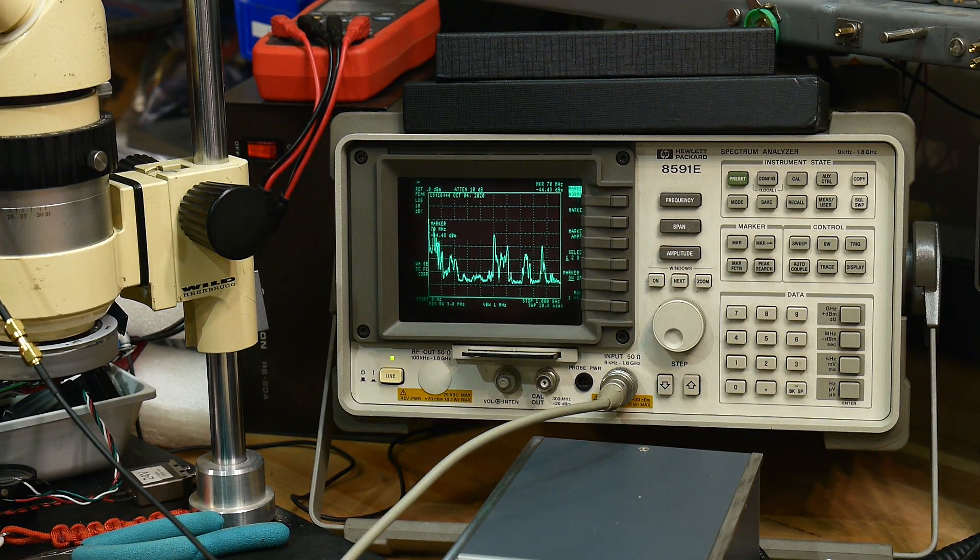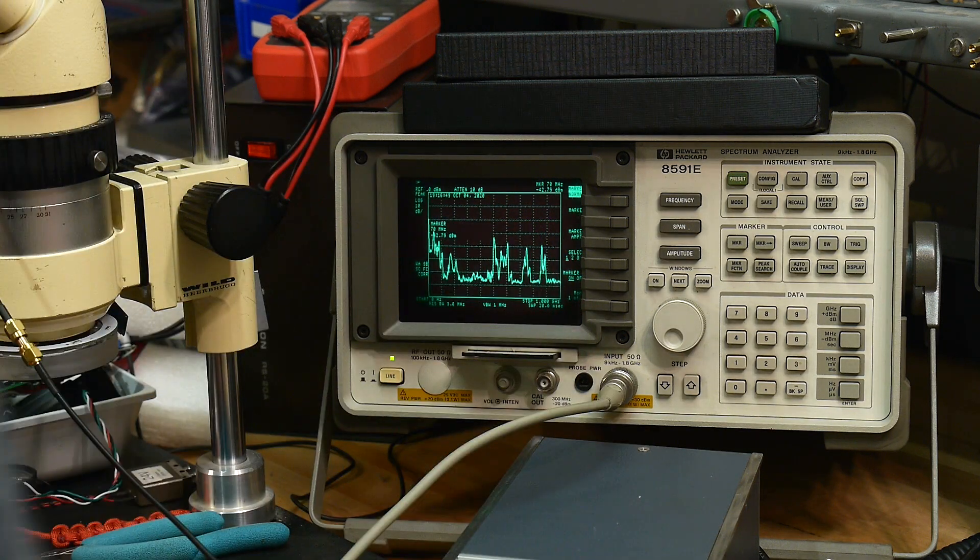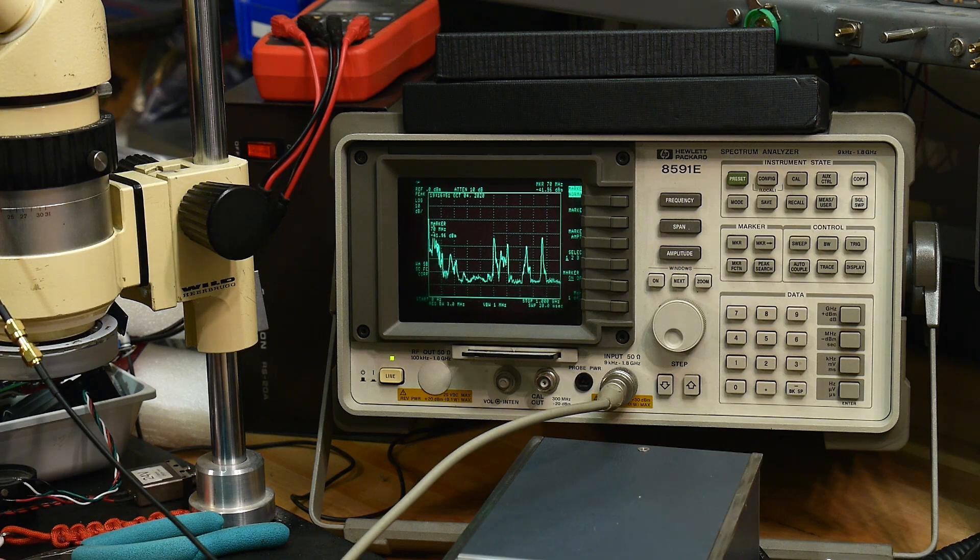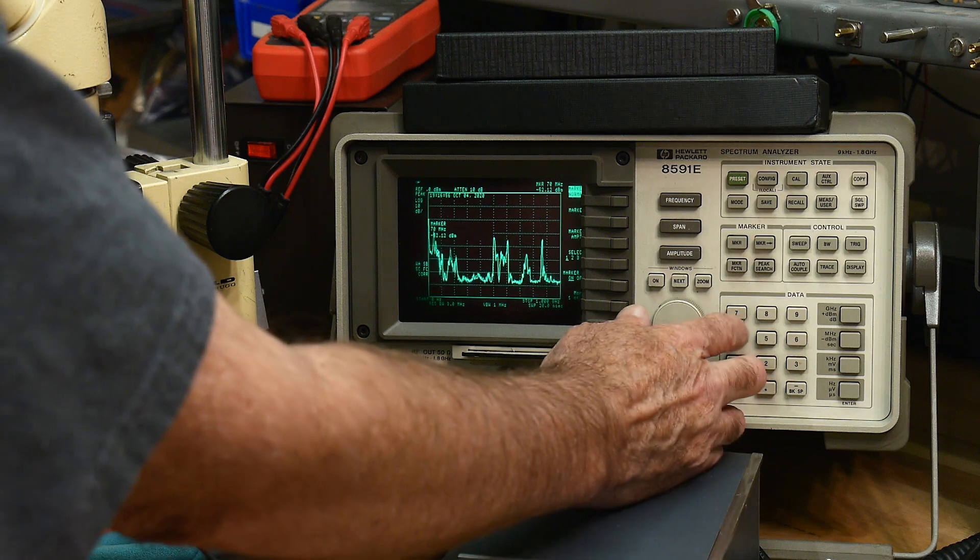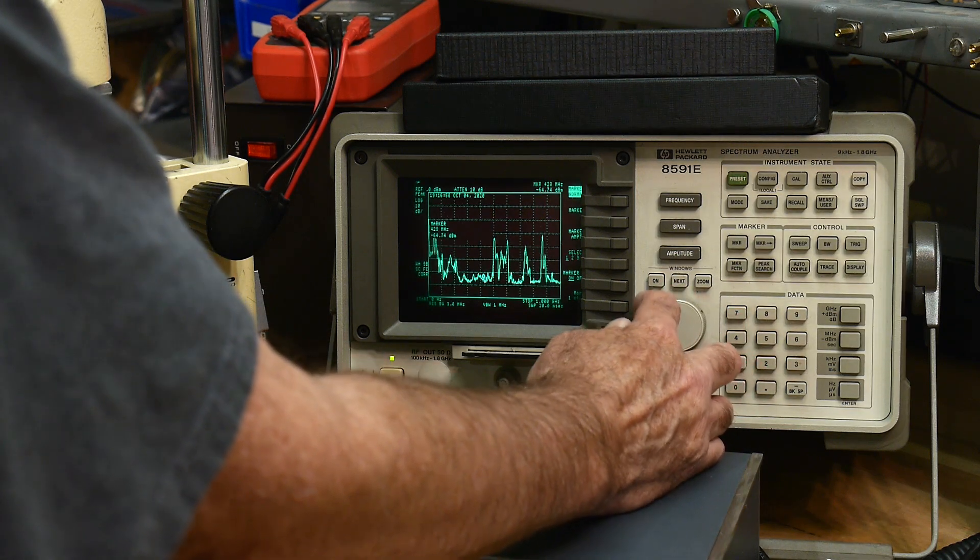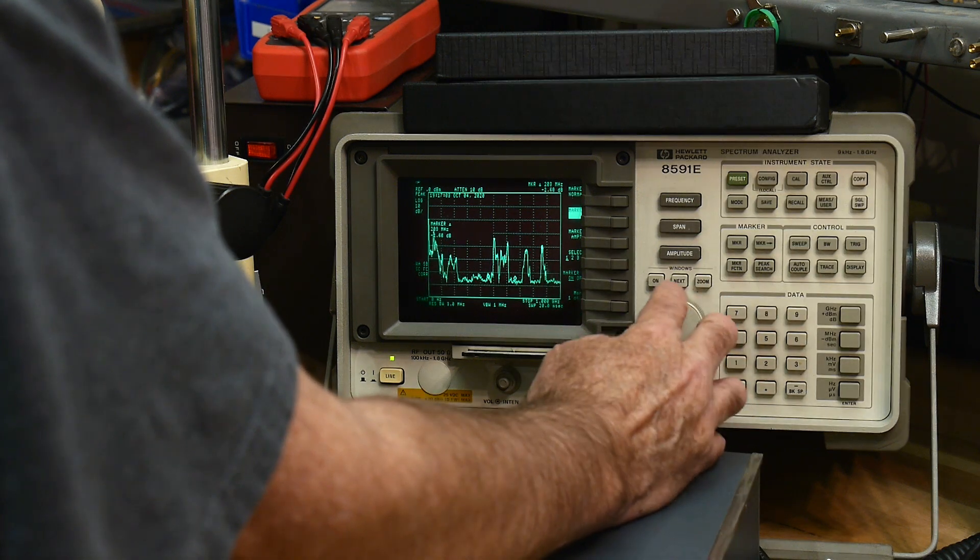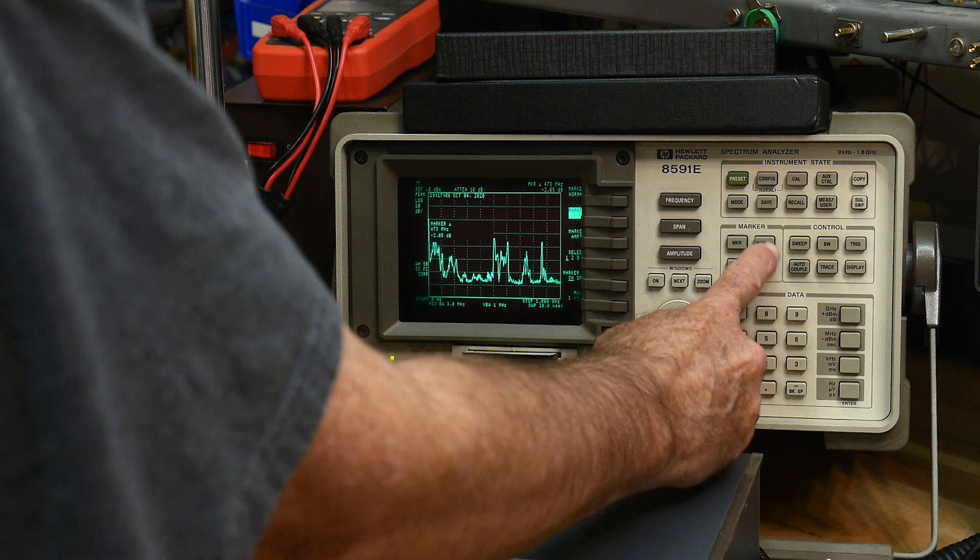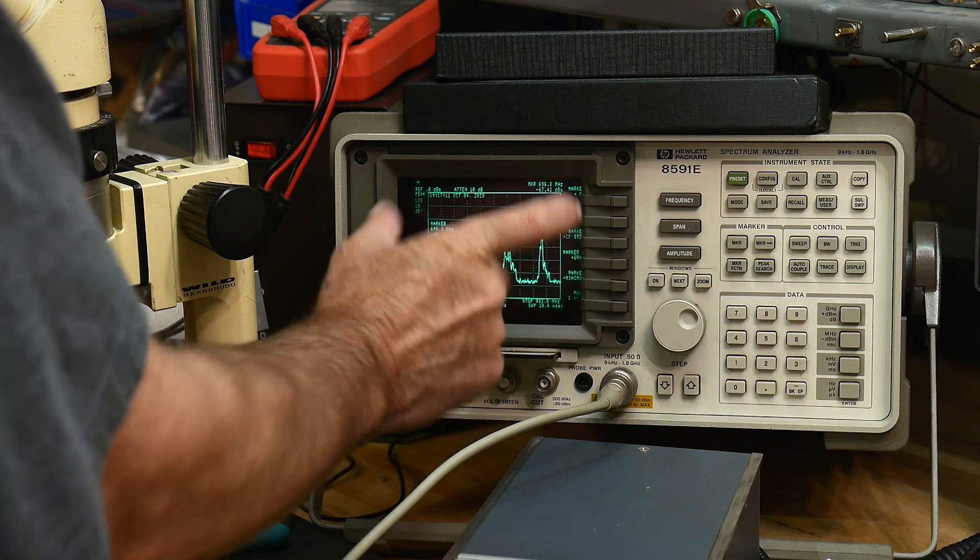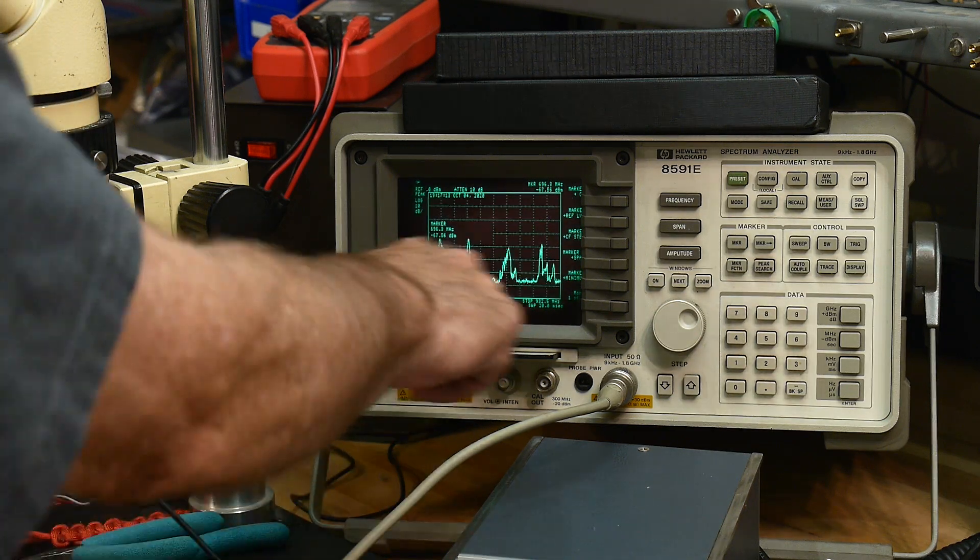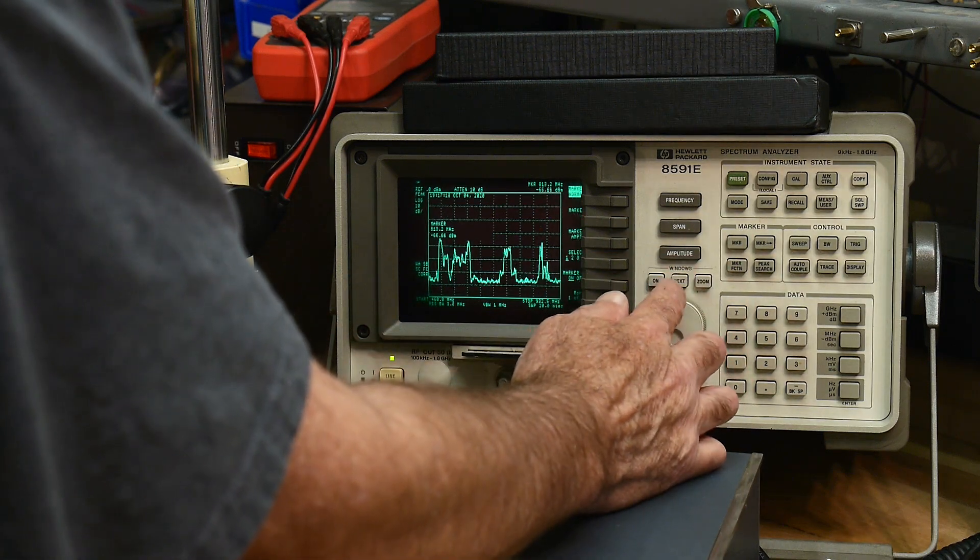This is really nice. Having a low noise amplifier can really help do things like this. We can zoom in here. Don't get in front of the camera. We can zoom in here. We'll turn on marker, do a delta marker, come over here, and then do marker to span. So I placed two markers and said span to that so we can see all the activity here. There's all kinds of stuff going on.